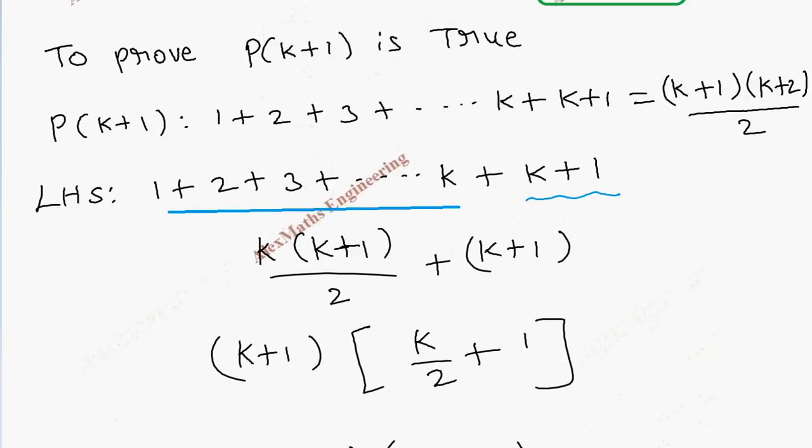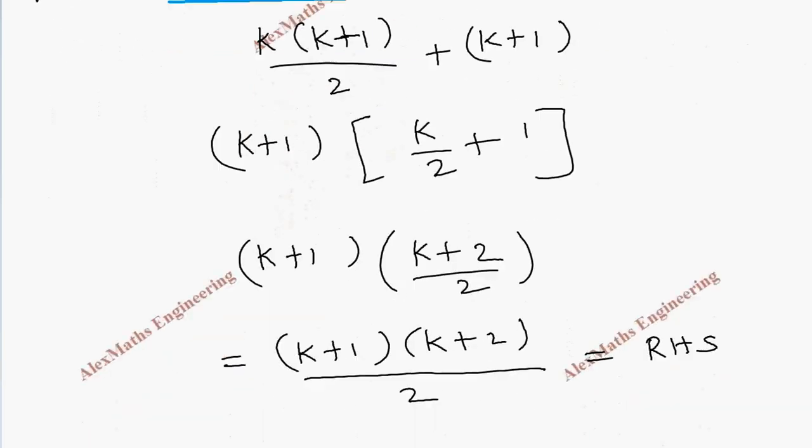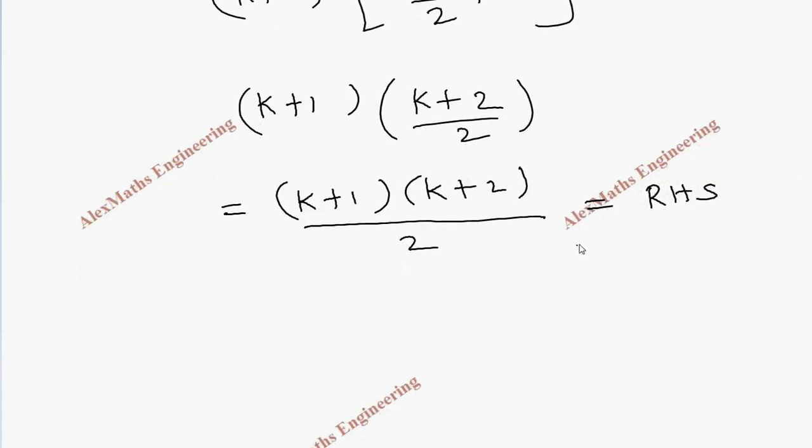Finally, we have (k+1)(k+2)/2, which is nothing but RHS. So we took LHS from P(k+1) and we got the RHS. Therefore, P(k+1) is true.